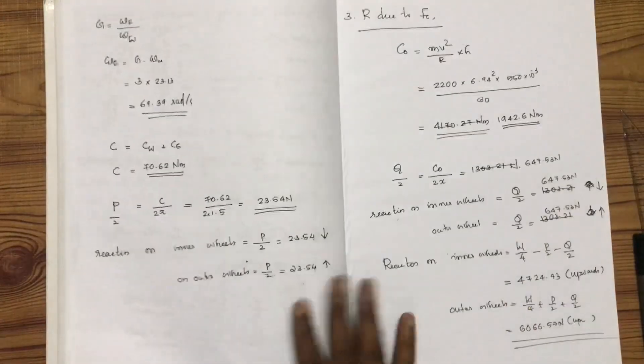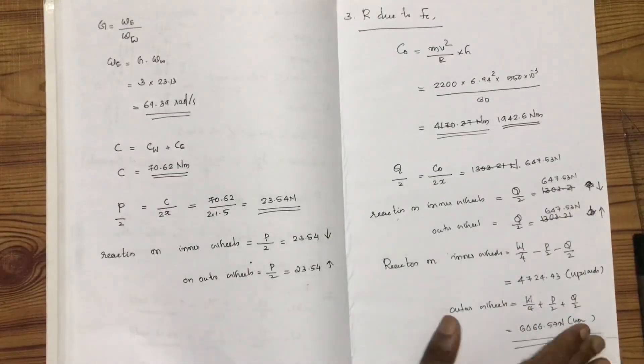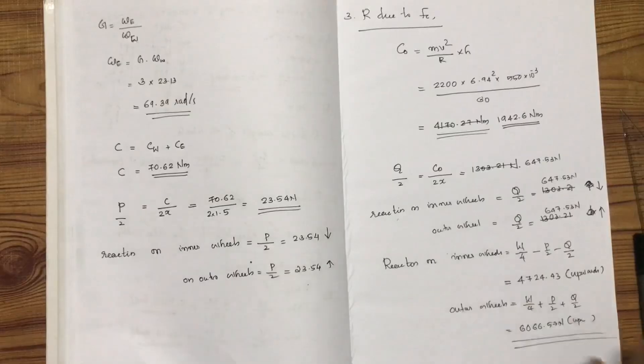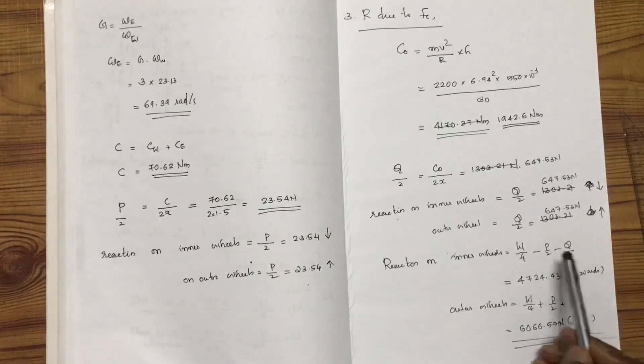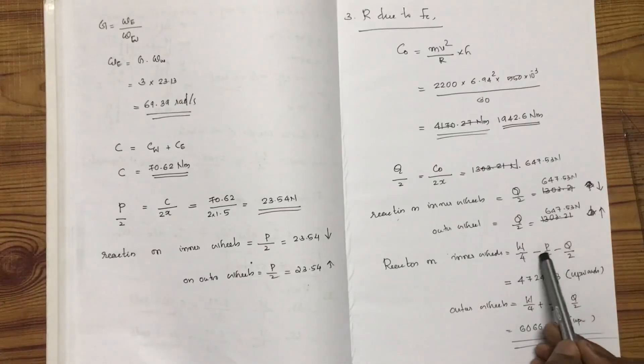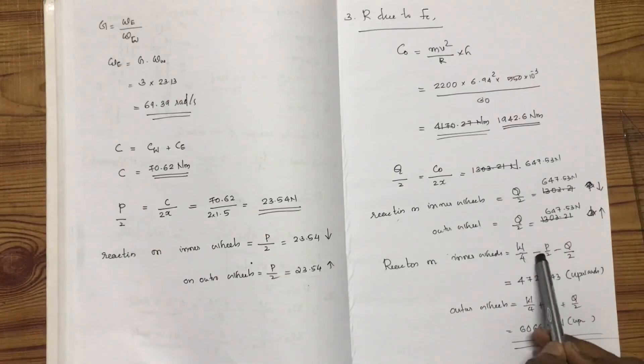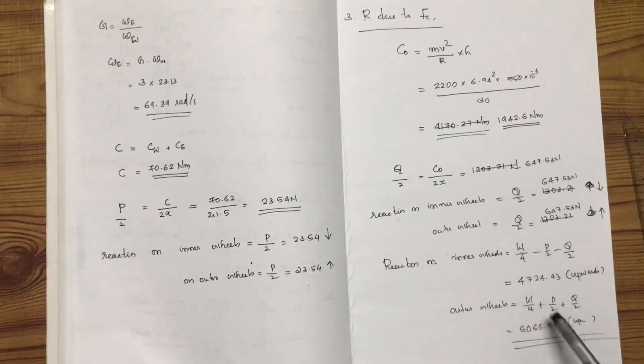Now let us see how we approach this. We use a minus value since the motor runs opposite to the wheels.